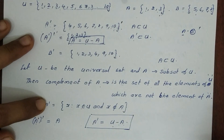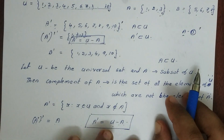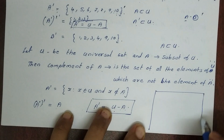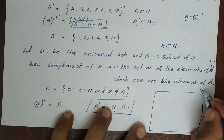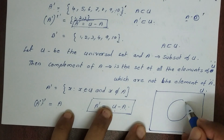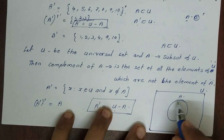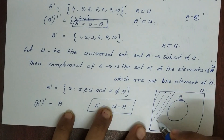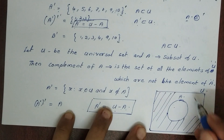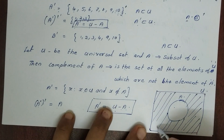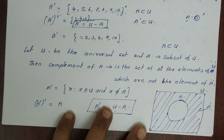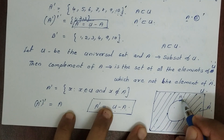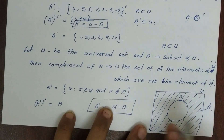Then we represent the Venn diagram. We represent a rectangle as the universal set U, and the set A is drawn inside it. This is the Venn diagram representation of A complement — the shaded region outside A within U.